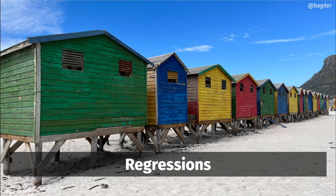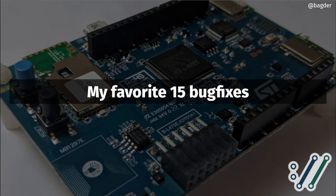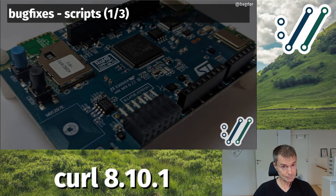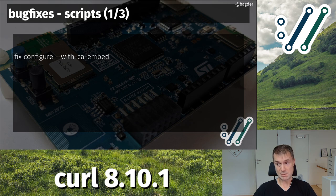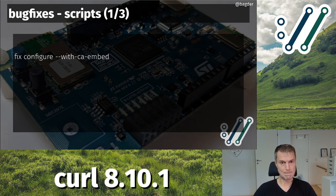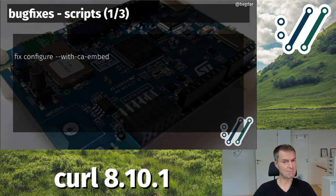We have to do the release to find out the problems, fix the regressions, and iterate. We do the best we can. This time I'm going to mention my favorite 15 bug fixes. Starting with some build/script things: the --with-ca-embed option is a new feature we introduced in the previous release. When you build curl with that configure option, it embeds the CA store into the curl tool. It had a flaw where it could end up bundling a blank CA store instead of the actual one — that's fixed.